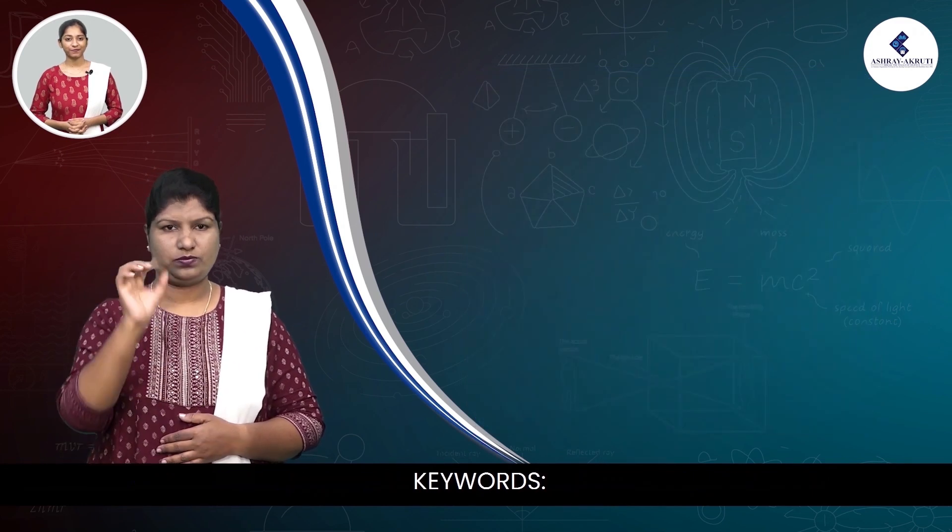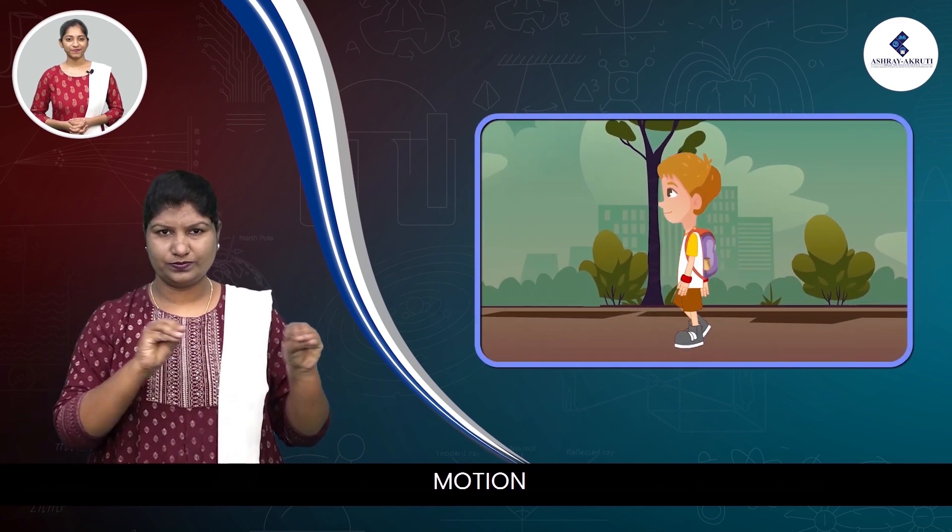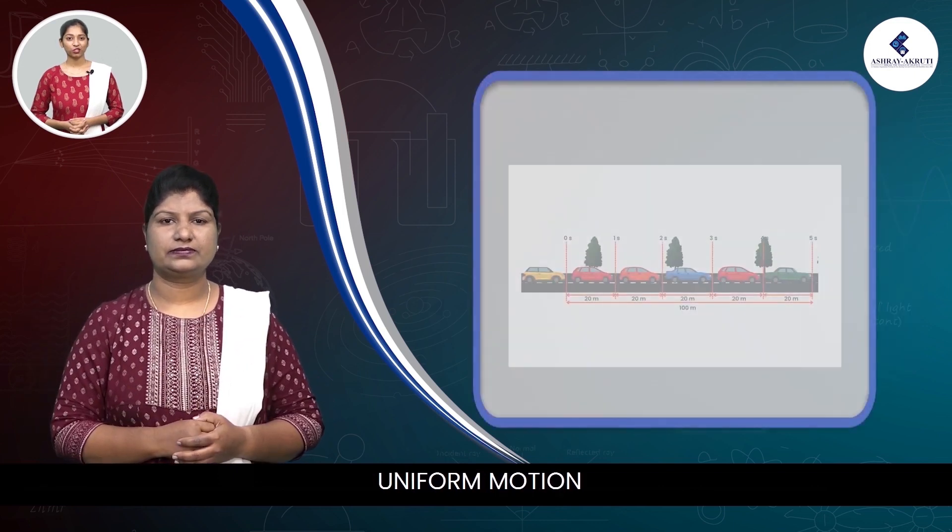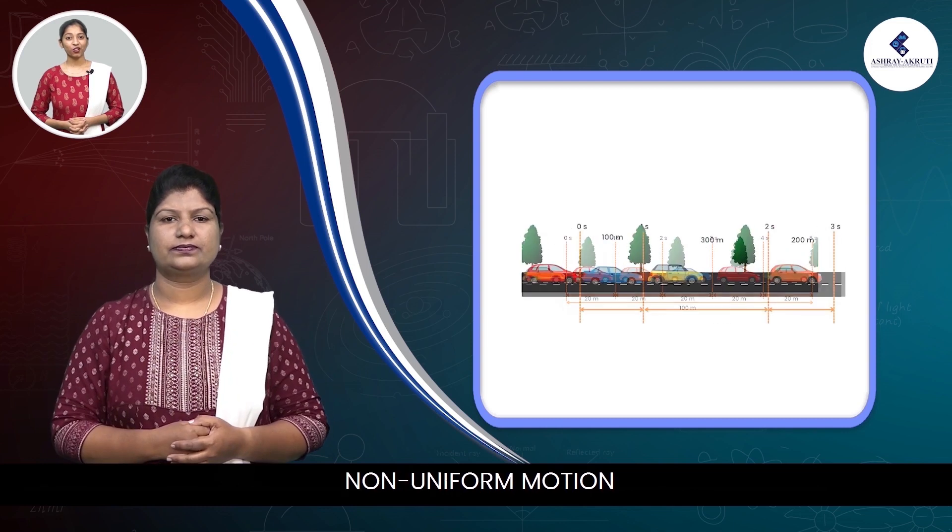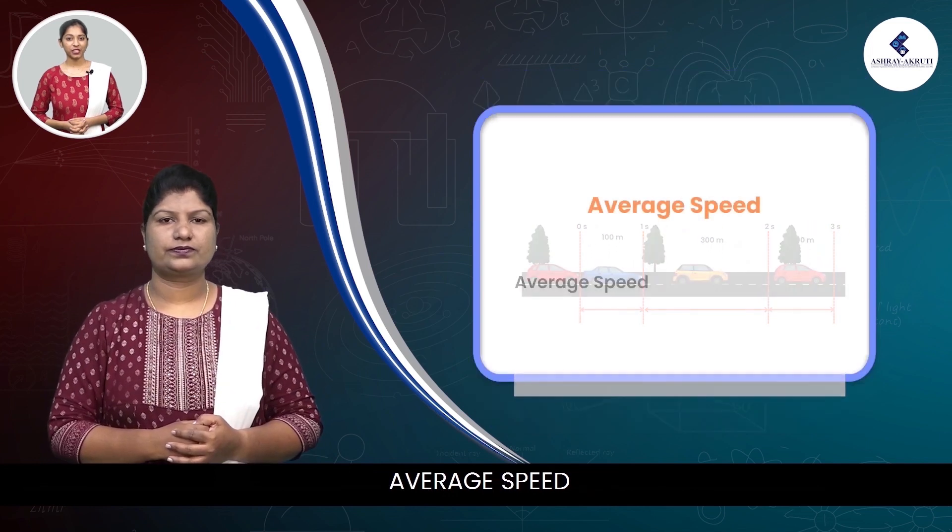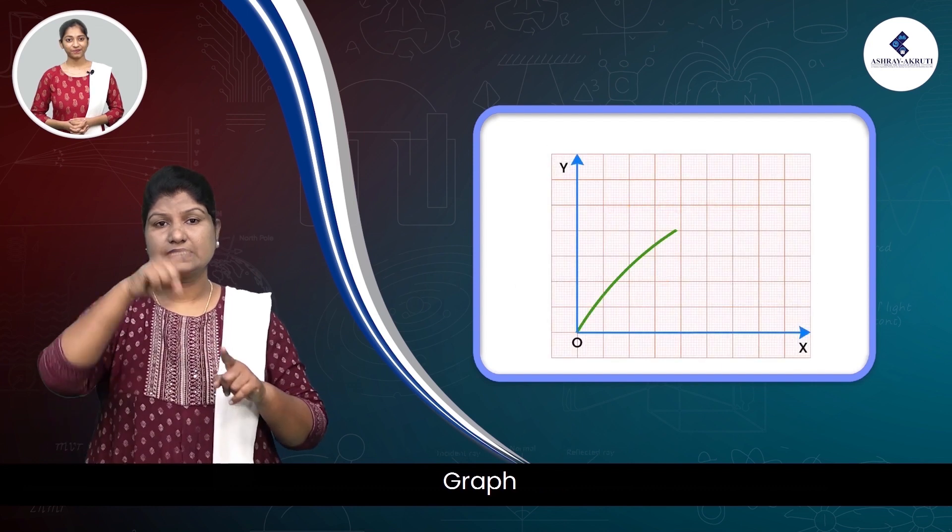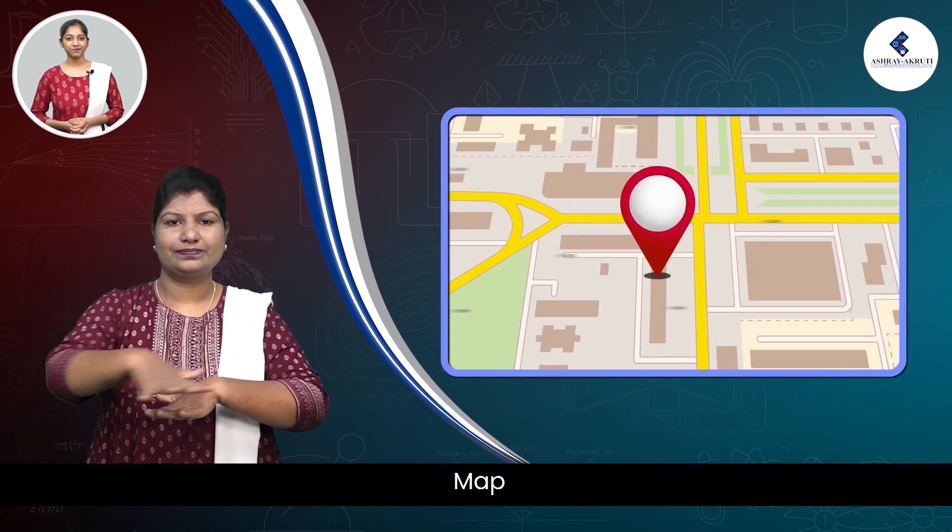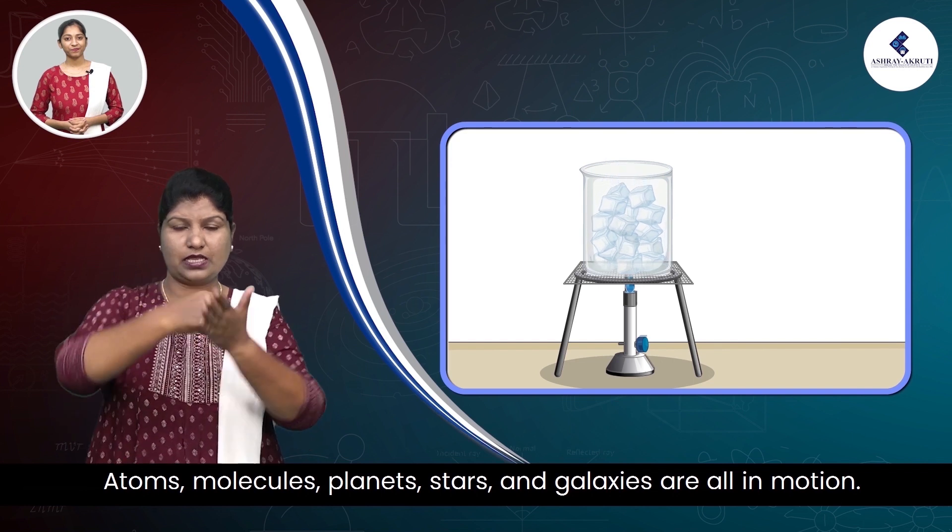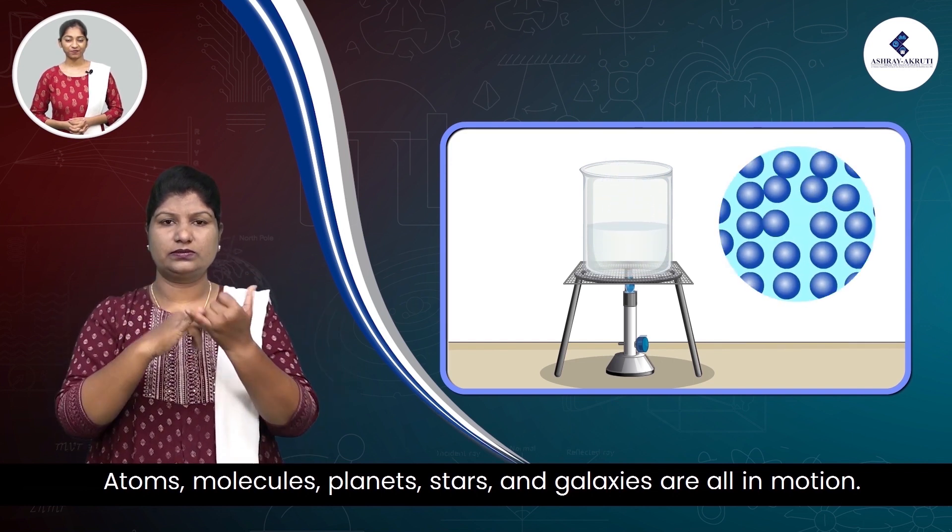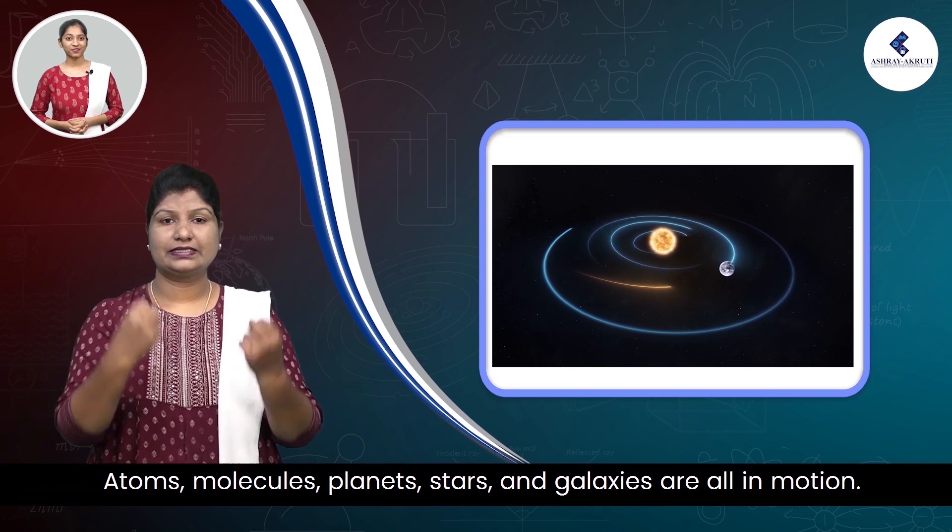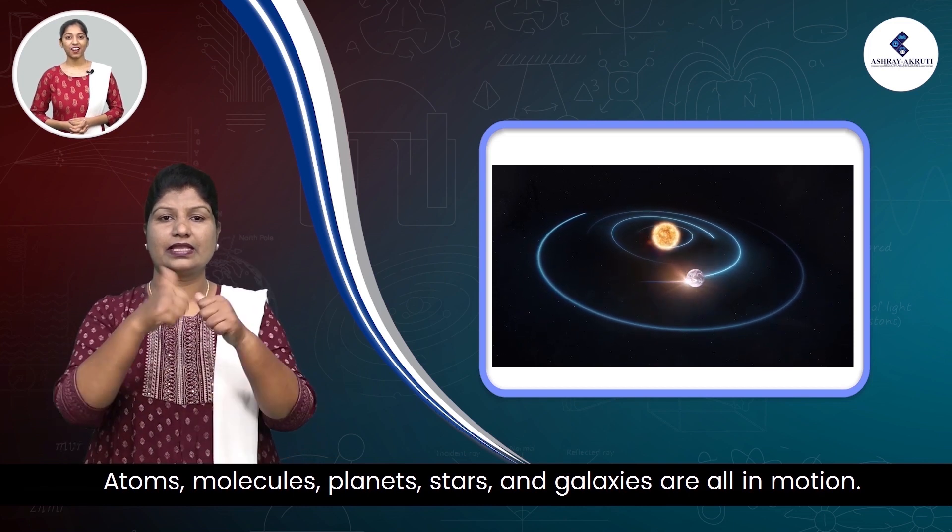Keywords: motion, straight line, uniform motion, non-uniform motion, average speed, graph, map, atoms, molecules, planets, stars, and galaxies are all in motion.